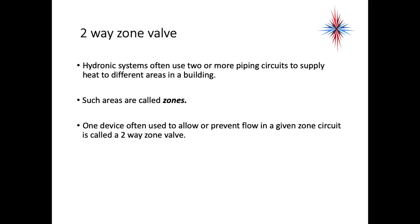So the first valve we're going to spend some time on is the two-way zone valve. Hydronic systems often use two or more piping circuits to supply heat and cool to different areas in a building. Such areas are called zones. One device often is used to allow or prevent flow in a given zone circuit. And this is called a two-way zone valve.